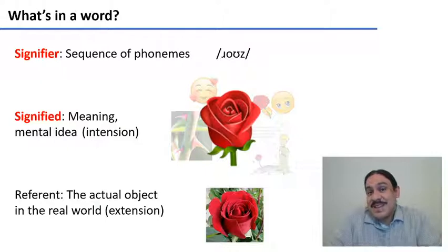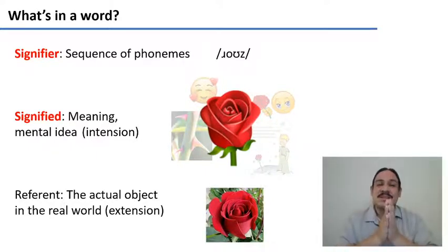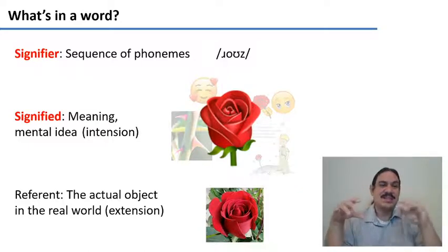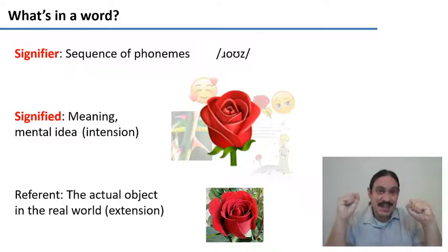And the first question we should ask is what is a word? A word is basically composed of two parts: the signifier and the signified.